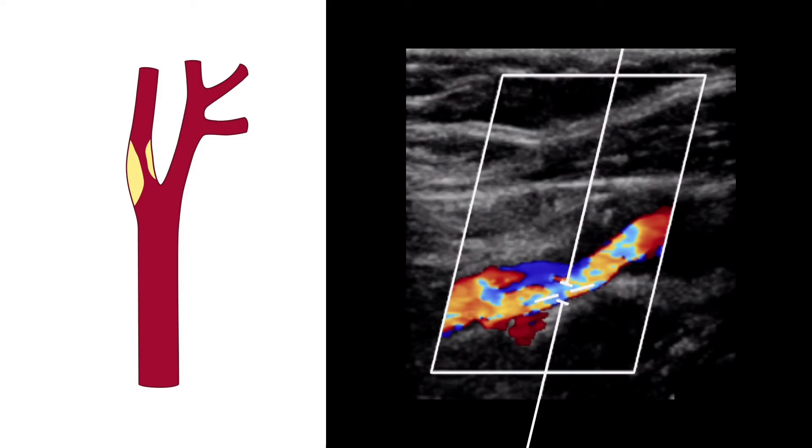A tight stenosis or high velocity jet just beyond a stenosis may also cause aliasing to occur in the color flow image. The marked changes from reds to blue associated with aliasing will make tight stenosis easy to identify.